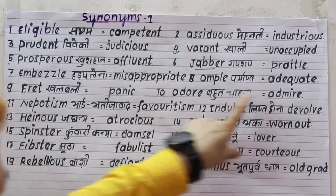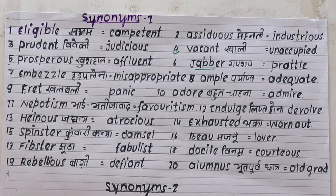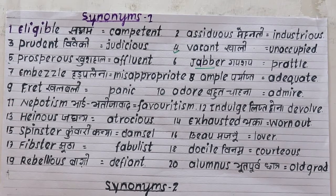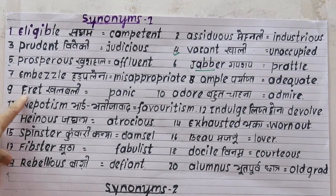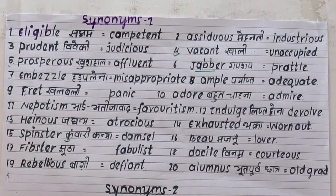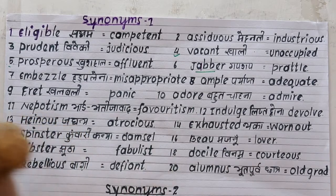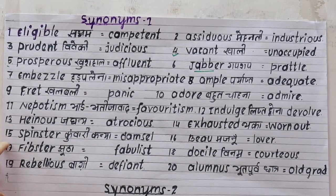Number nine is 'fret', meaning to worry or panic. For example: don't fret, don't panic, don't worry. Number ten is 'adore', meaning to love very much. The synonym is 'admire'. For example: I adore her — she admires me.